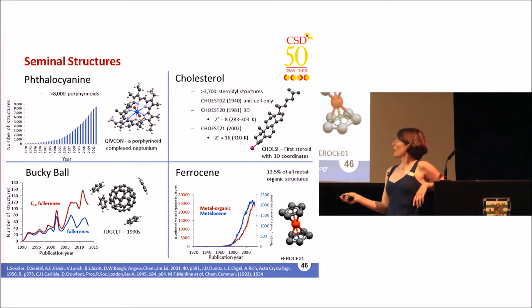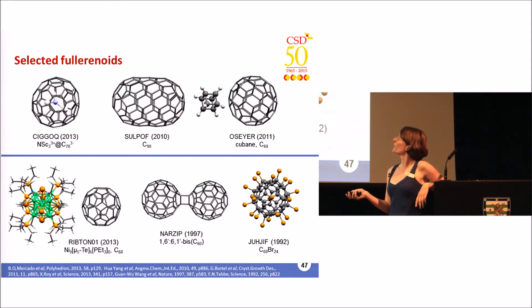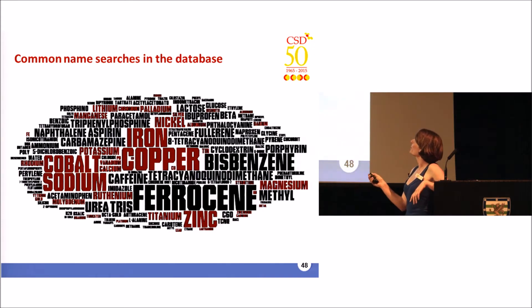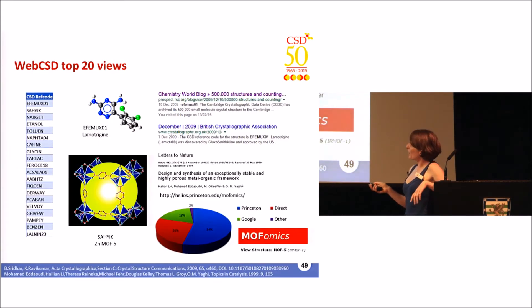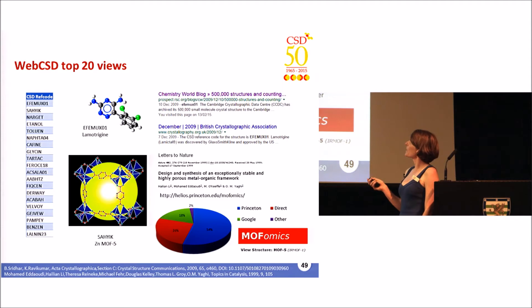My personal favorite structures are the buckyballs, and the fulleroids are getting more and more complex. I'd quite like to know what your favorite structures are, so we looked at what common searches you do on WebCSD — people are searching for things like ferrocene. We can also see what's viewed most in WebCSD: the top viewed structure was lamotrigine, one of the approved drugs in the CSD, which also happens to be the half-millionth structure added to the CSD.